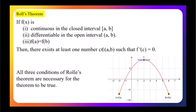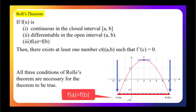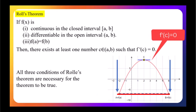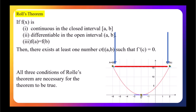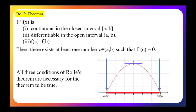This theorem was proved in 1691 by the French mathematician Michel Rolle, though it was stated without a modern formal proof in the 12th century by the Indian mathematician Bhaskara II. The theorem basically says that if f(a) equals f(b), then there exists a point where the tangent is parallel to the x-axis. Note that f(a) and f(b) can be below the x-axis, above the x-axis, or on the x-axis.